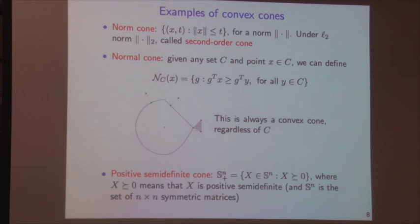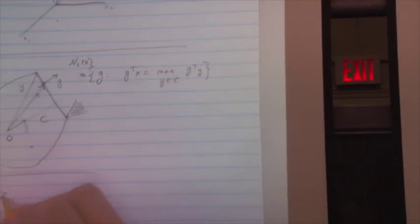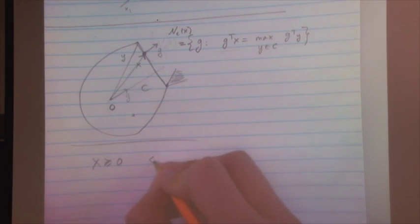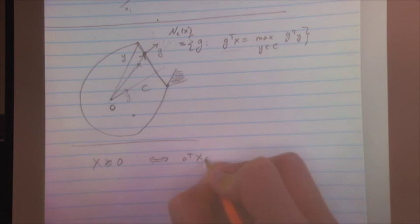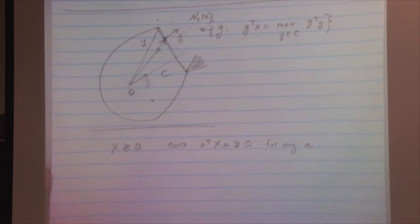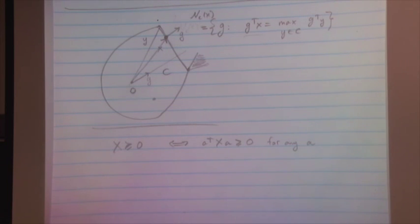Just to clarify the notation: X ⪰ 0 means X is positive semi-definite, i.e., a^T X a ≥ 0 for all vectors a. If you're rusty on this, review your linear algebra notes.